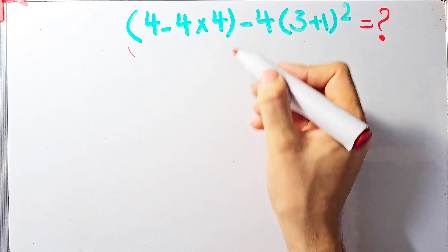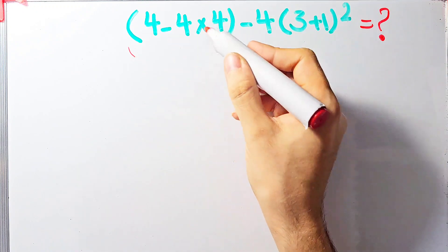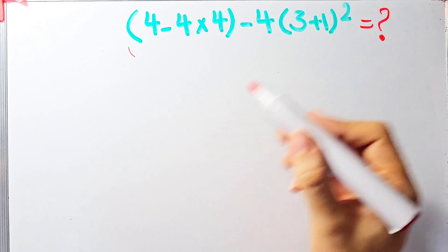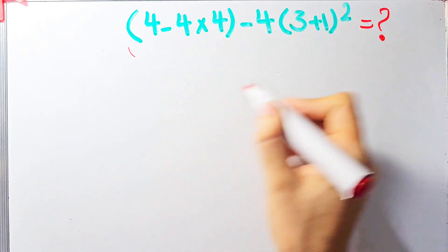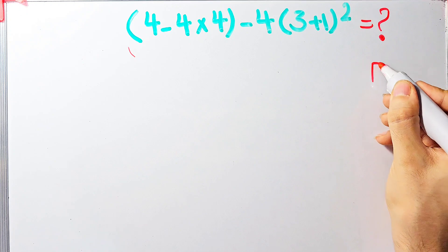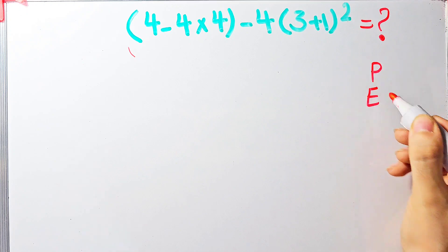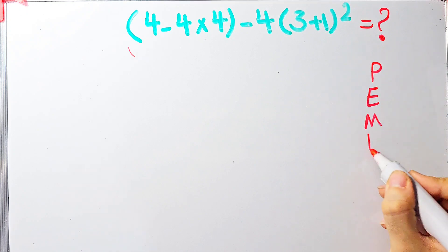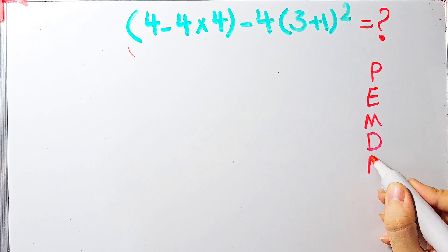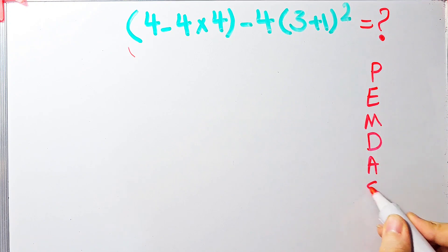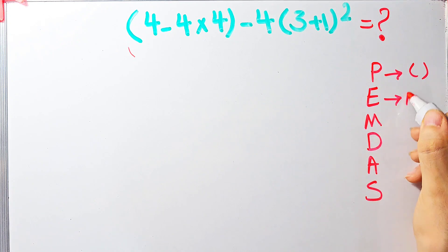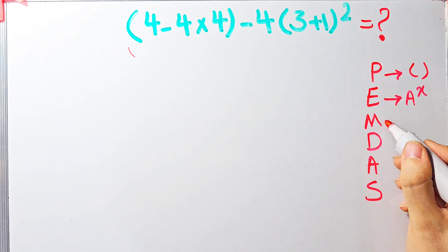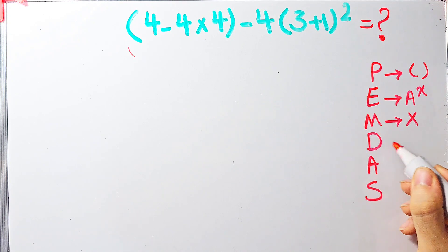In this question we have parenthesis, subtraction, multiplication, addition, and exponent. To solve this question we need to follow the PEMDAS rule. PEMDAS shows the priority of mathematical operations, and if you don't pay attention to this rule you get the wrong answer. P stands for parenthesis, E stands for exponent, M stands for multiplication.